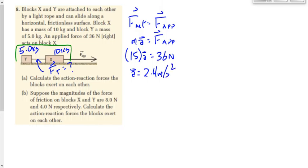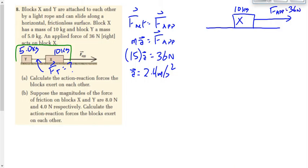That's the first thing you do — analyze the system to get the acceleration. Then you've got to pick an object — X or Y? Both of them will work. Bruce suggested we pick object X, so let's draw a free body diagram for object X. Object X has a mass of 10 kilograms. We have an applied force of 36 newtons. Any more forces acting on object X? The rope — which way does the rope pull? The rope is pulling back. I'll call that FT, or FYX — the force of Y on X. That's the internal force between X and Y.